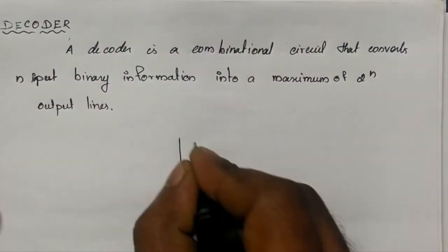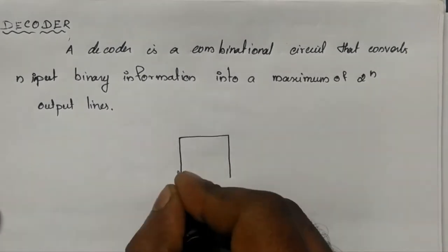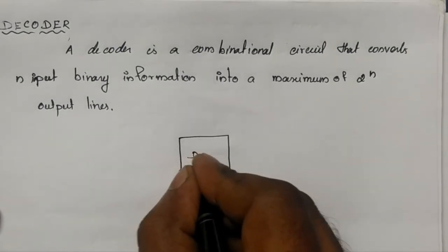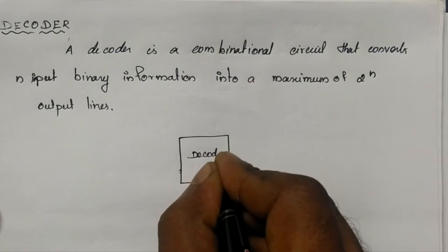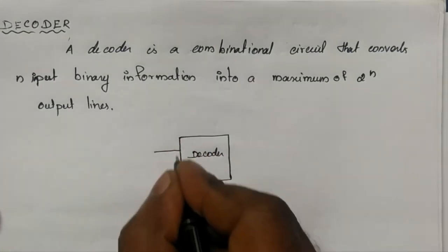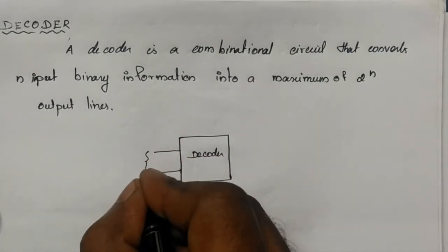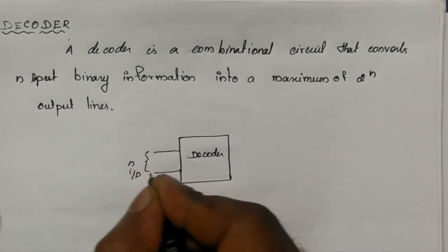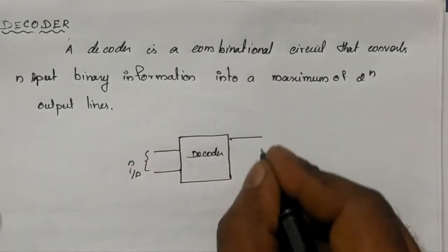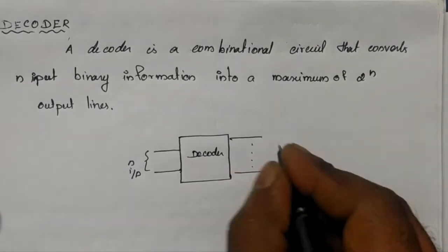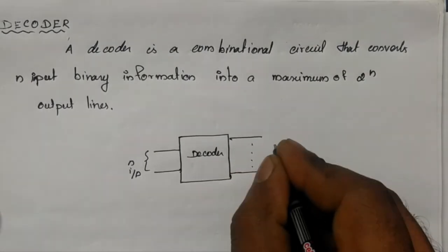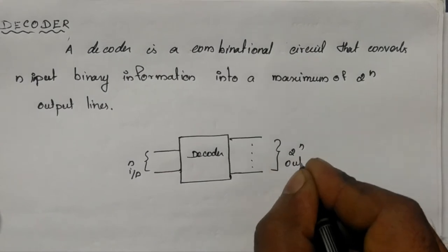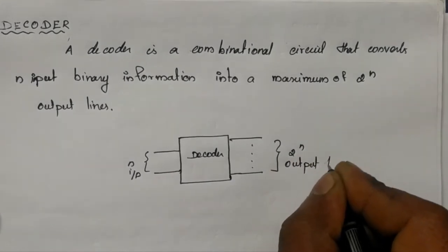Here is the block diagram. So here we have a decoder with n input lines and 2-power-n output lines.